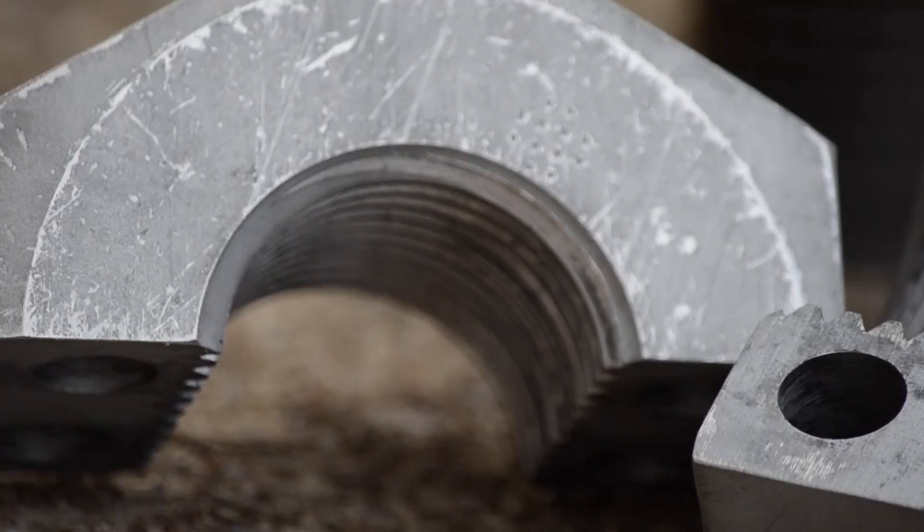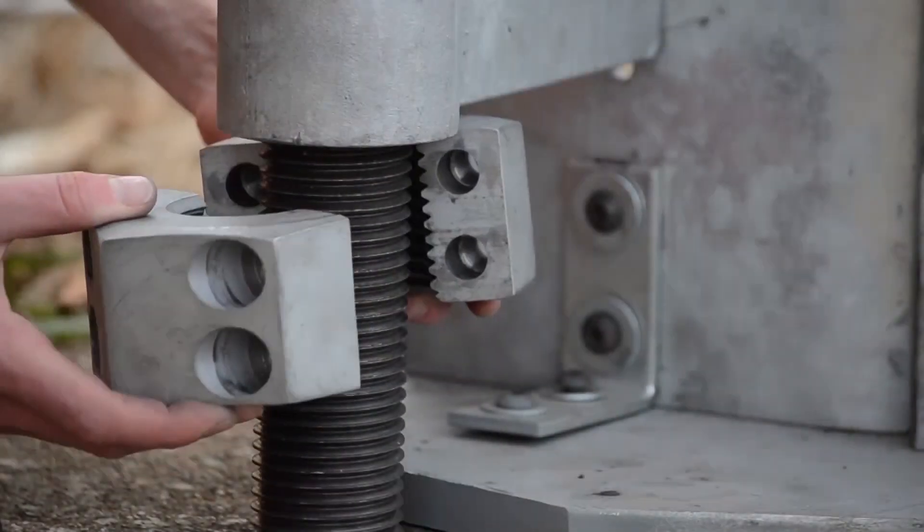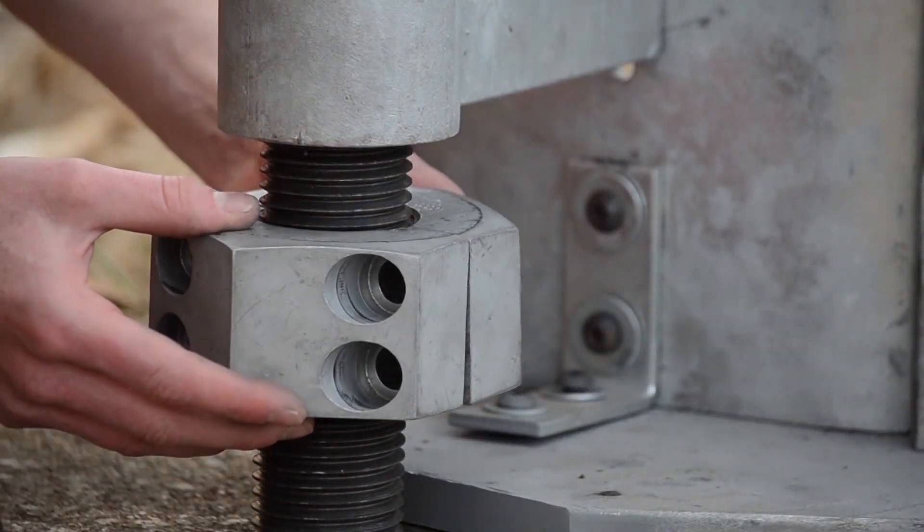We are now going to demonstrate how to install the split nut structural nut. Step 1: Place both halves of the split nut around the anchor rod and align the edges.